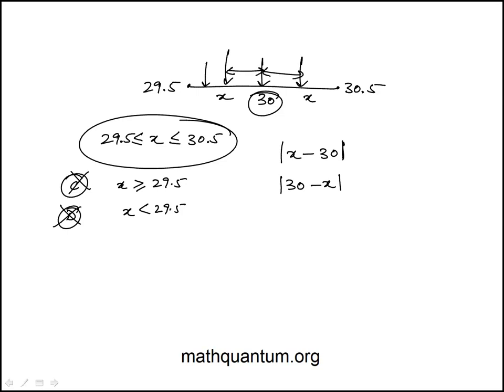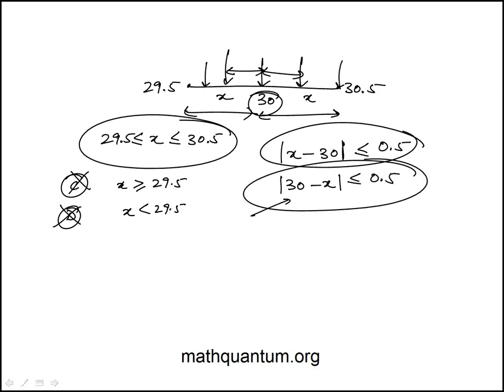So that has to be less than or equal to 0.5 because it can at most be 0.5 if it's here. So all of these values have to satisfy this condition. They're both equivalent. And we notice that that is indeed in the answer choice, which is A.